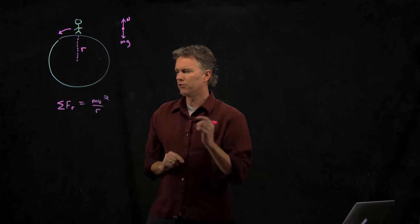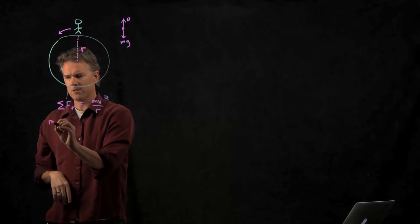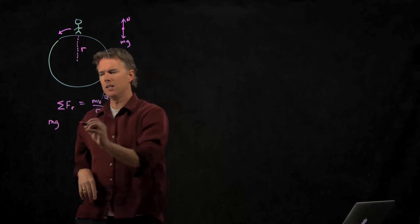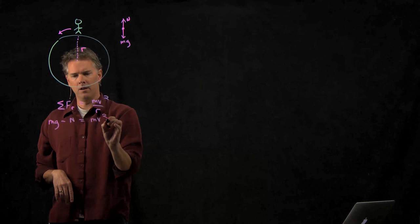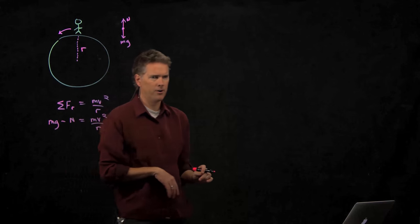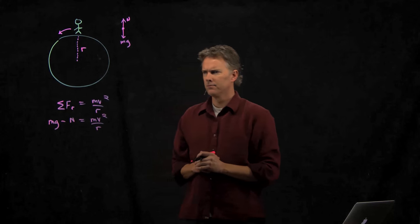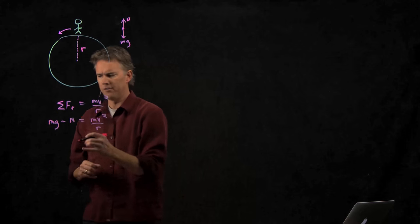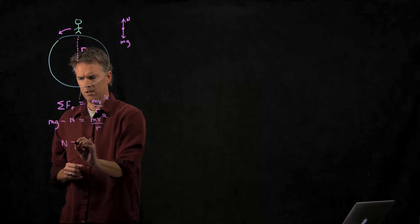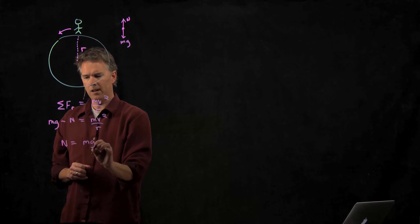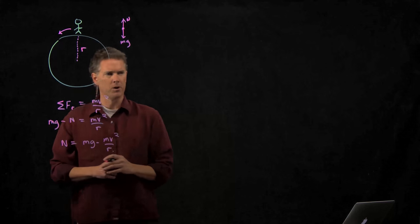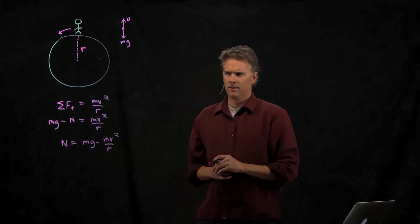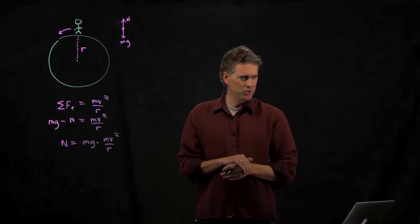The sign convention that we just talked about said that towards the circle center is positive. So mg is towards the circle center. N is away from the circle center. And that has to be mv squared over R. And so look what happens. If I solve this for n, what do I get? N is mg minus mv squared over R.